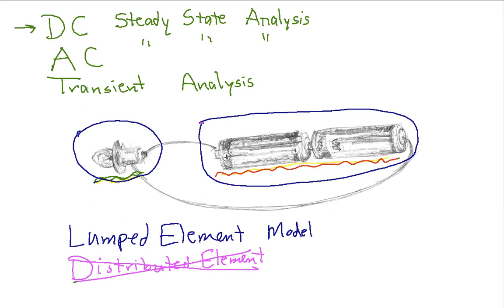AC steady state analysis. AC stands for alternating current. And that's the kind of current that you would see in an electrical power distribution network, for example. In AC current, you typically assume that currents and voltages are sinusoids. And so AC steady state analysis involves treating each of your voltages and currents in your circuit as sinusoids.